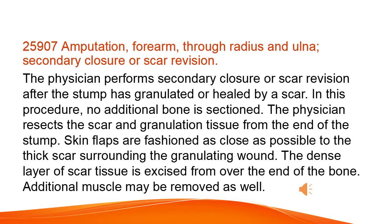Amputation of the forearm through the radius and ulna — secondary closure or scar revision. The physician performs secondary closure or scar revision after the stump has granulated or healed by a scar. In this procedure, no additional bone is sectioned. The physician resects the scar and granulation tissue from the end of the stump. Skin flaps are fashioned as close as possible to the thick scar surrounding the granulating wound. The dense layer of scar tissue is excised from over the end of the bone. Additional muscle may be removed as well.